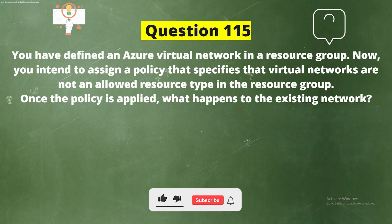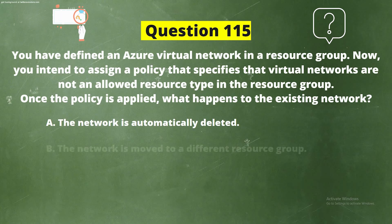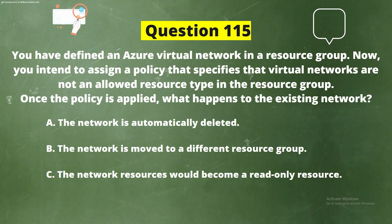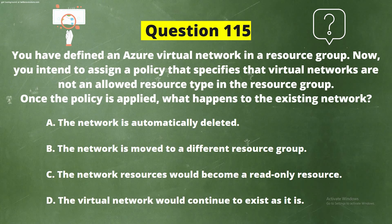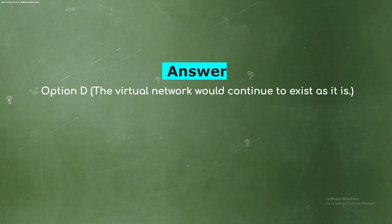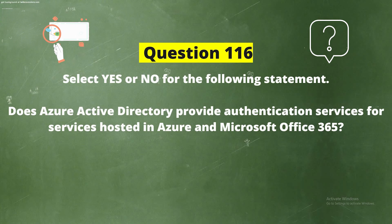Question 115: You have defined an Azure virtual network in a resource group. You intend to assign a policy specifying that virtual networks are not an allowed resource type in the resource group. Once the policy is applied, what happens to the existing network? The correct answer is Option D: The virtual network would continue to exist as it is. However, Azure policies would show the resources as non-compliant resources.